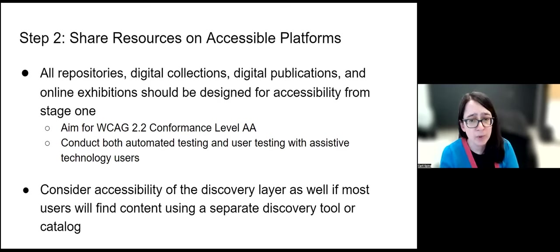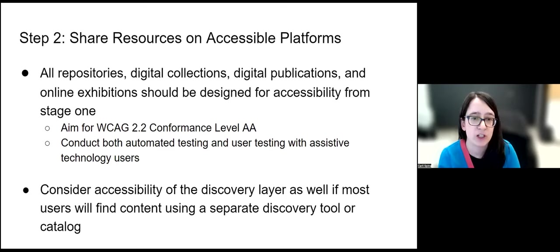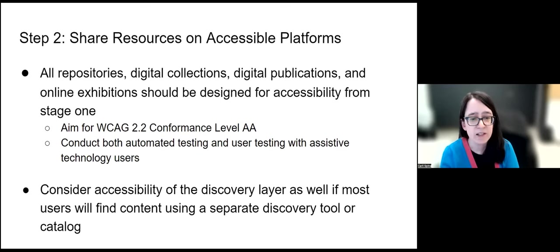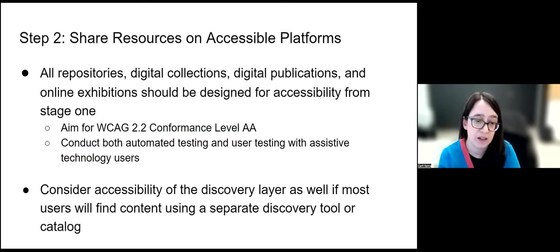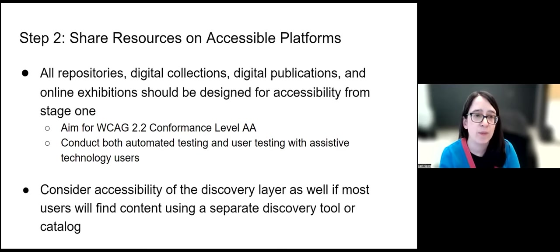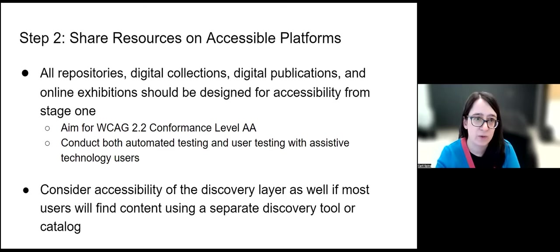If you find problems, it's important to disclose those problems and have a plan for how you might help somebody if it's not possible to achieve that level of conformance across the entire platform. Also consider accessibility of the discovery layer, since that's how most users will find content — many libraries now use discovery layers or catalogs as the primary way they share information. Always be thinking about accessibility of those as well.